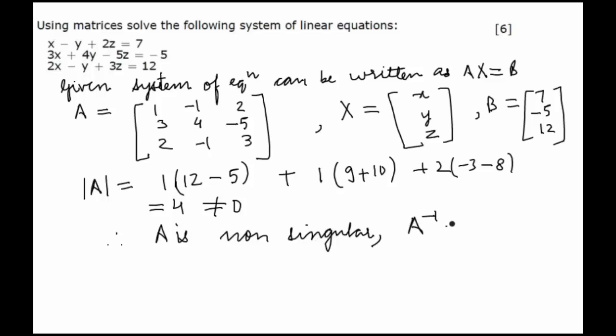Now we try to find out A inverse. For A inverse, first we need to know the value of adjoint of A. So adjoint of A is: 7, 1, minus 3; minus 19, minus 1, 11; minus 11, minus 1, 7.